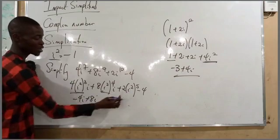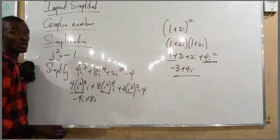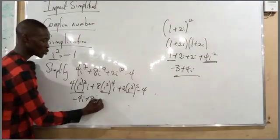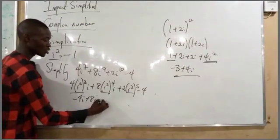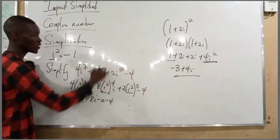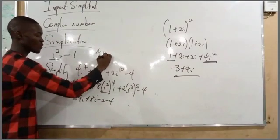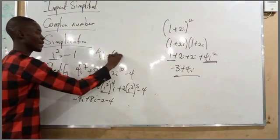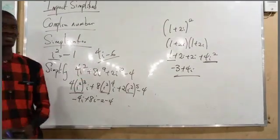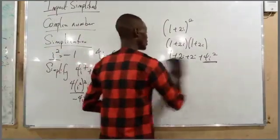So minus 2 minus 4 combined with the i terms: summing everything up gives us 4i minus 6. That is all about simplification.